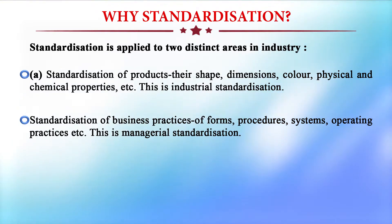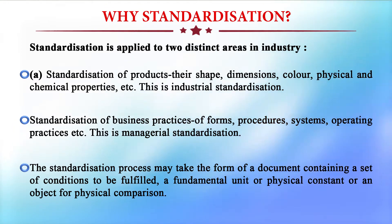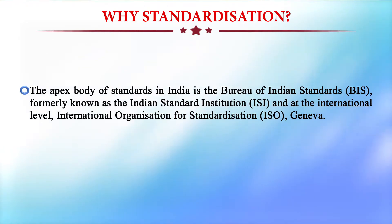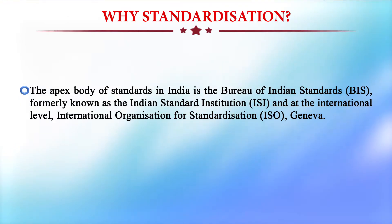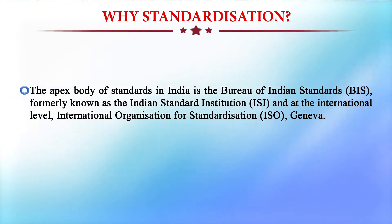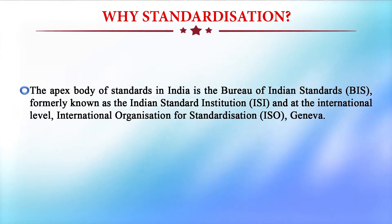The standardization process may take the form of a document containing a set of conditions to be fulfilled, a fundamental unit, a physical constraint, or an object for physical comparison. The apex body of standards in India is the Bureau of Indian Standards, formerly known as the Indian Standard Institute (ISI). At the international level, the International Organization for Standardization is based in Geneva. These are the two important bodies which provide standardization for items, processes, or business.